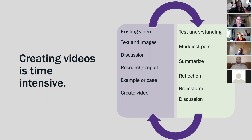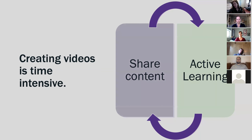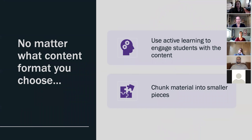Regardless of the way that you share information, you'll want to think about how you ask students to engage, especially if it's a more passive activity like watching a video. Consider asking students a few short questions to test their understanding, or ask them to complete a reflection, a muddiest point — the thing they don't quite understand by the end — brainstorms, discussions, and so on. The key is that there's a cycle between sharing content paired with active learning, asking students to engage with, reflect on, and make meaning from that information.